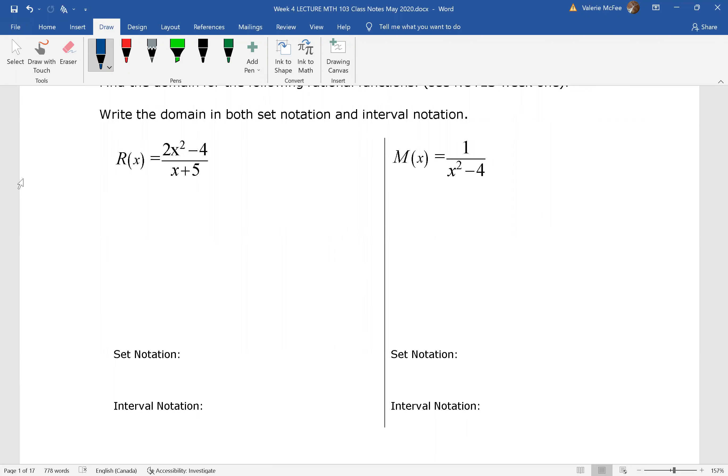Write the domain in both set notation and interval notation. Remembering that we're just looking at the denominator, the denominator cannot equal zero. So we see that x cannot equal negative five. I always find it easiest, especially for interval notation, to draw that on the number line, because I can see the two intervals I have here. Of course, we have an open circle because x cannot equal negative five. If you haven't already done so, find the domain for M(x).